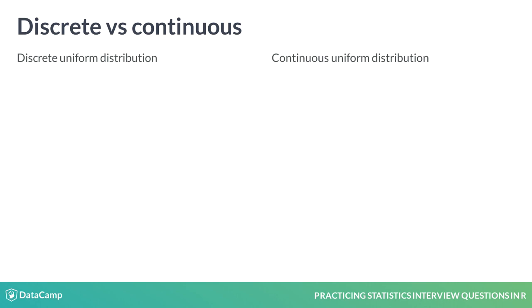Let's review the difference between discrete and continuous distributions using the example of a uniform distribution. A random variable from a discrete distribution can assume one of a finite number of values.